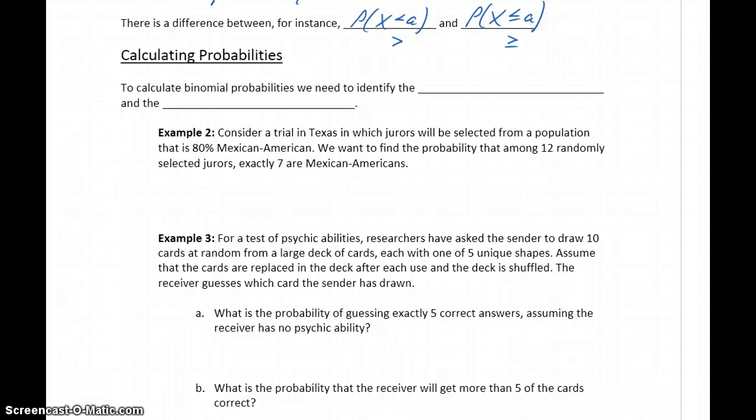So whenever we calculate binomial probabilities, assuming we've already verified the conditions that this approach can apply, we need to identify the number of trials, which is usually represented as n, and the probability of success, which is usually represented with a lowercase p.